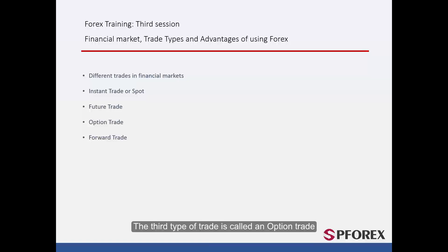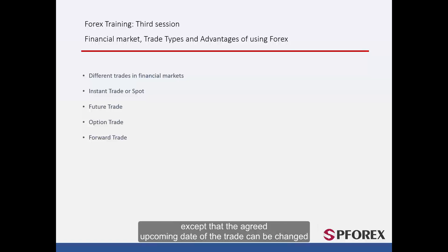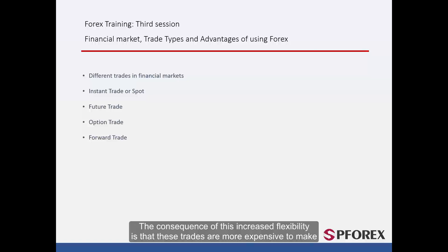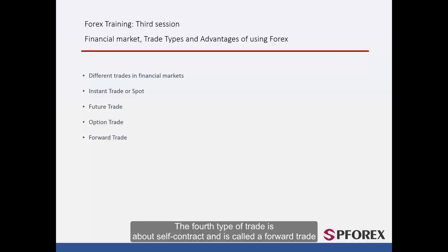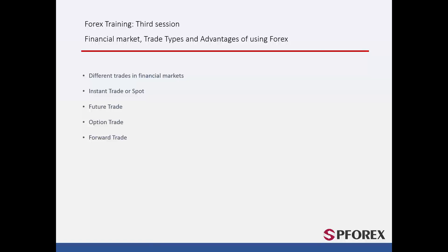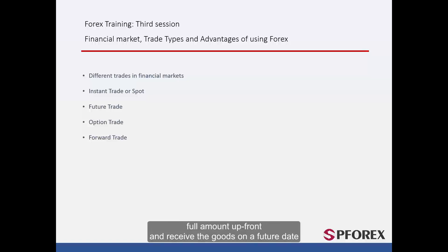The third type of trade is called an Option Trade. These are exactly the same as the future trades we just looked at, except that the agreed upcoming date of the trade can be changed. However, this can only be done if both parties agree on the change of date. The consequence of this increased flexibility is that these trades are more expensive to make. The fourth type of trade is about self-contract and is called a Forward Trade. In these trades, the buyer is required to pay the full amount up front and receive the goods on a future date.